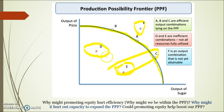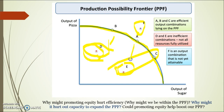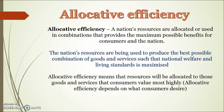Sometimes when we promote too much equity, that can lead to us working within our PPF because some people might choose not to work as hard if there's more generous welfare, and therefore that will lead to unemployment or underutilisation of resources. So sometimes there is a trade-off between the two.